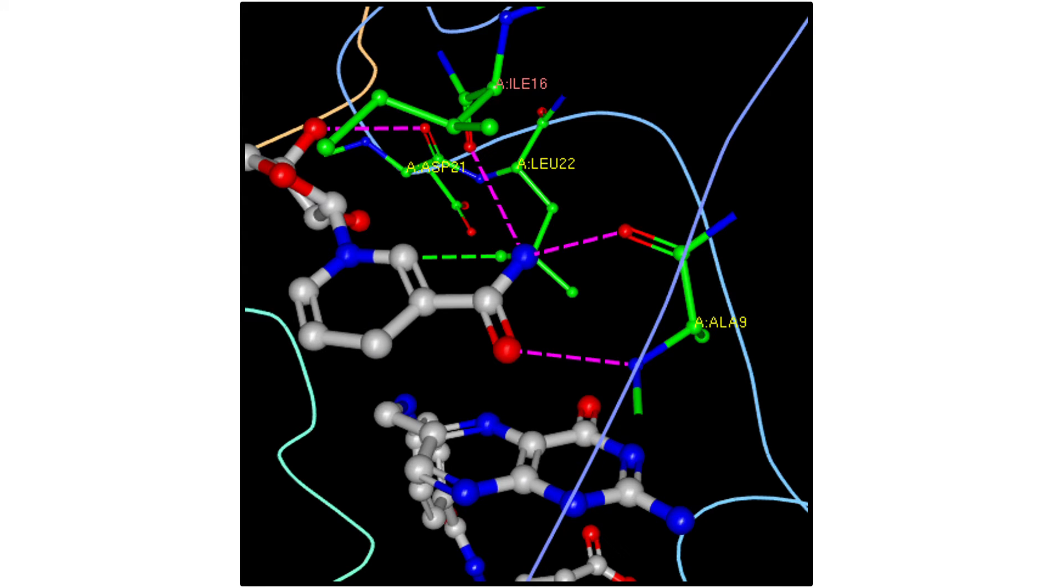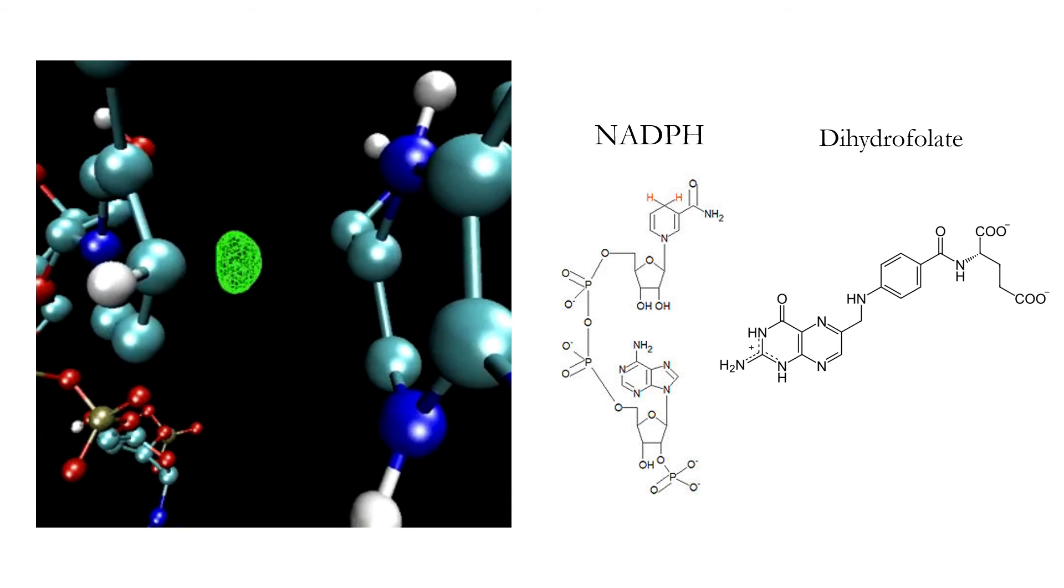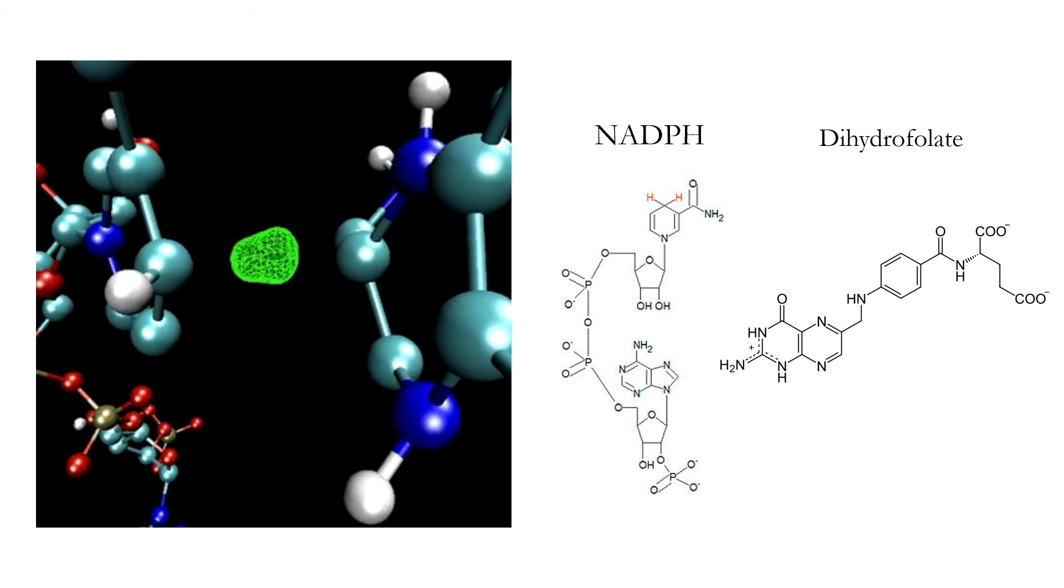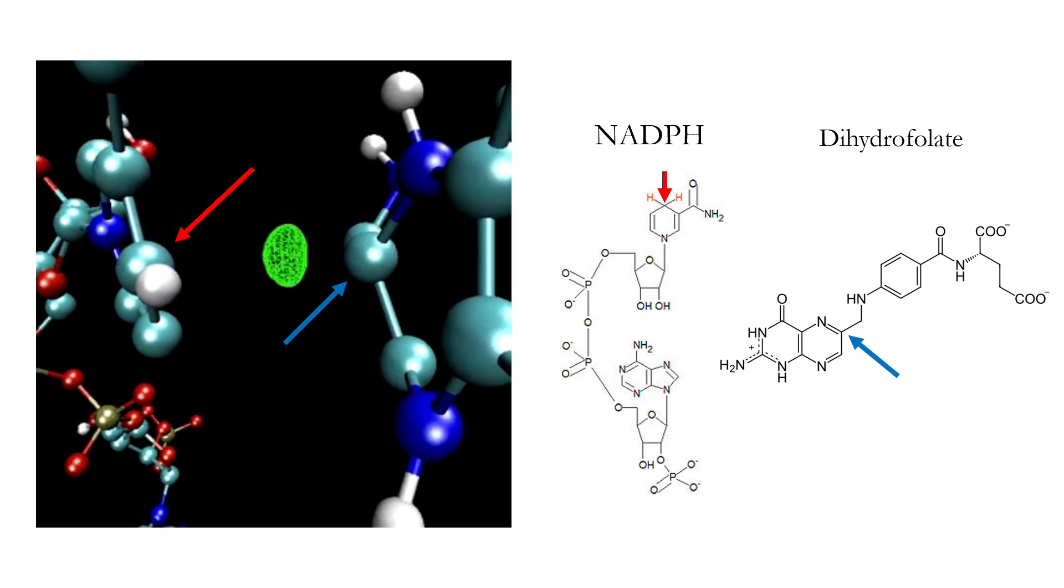Here's a look at how some of the residues in the MET20 loop's closed conformation interact with the atoms in or around the nicotinamide ring. In this image, you can see the amino acids in the MET20 loop forming favorable interactions with these atoms. The pink dashed lines represent hydrogen bonding, while the green dashed line shows a hydrophobic interaction. This closed conformation holds the NADPH and dihydrofolate in close proximity to one another, facilitating the transfer of a proton from this carbon on NADPH to this carbon on dihydrofolate.